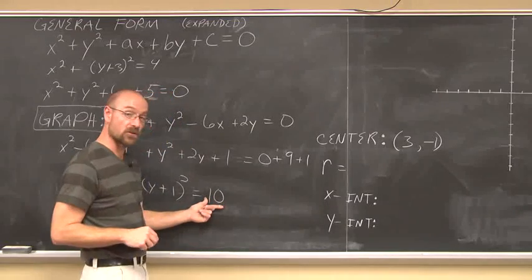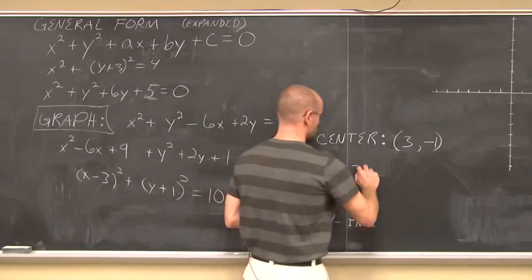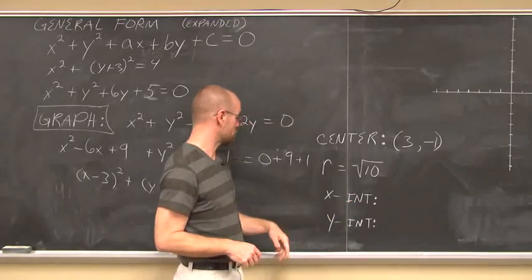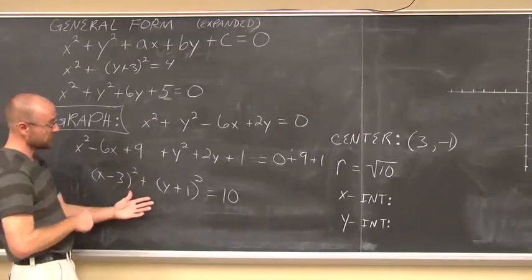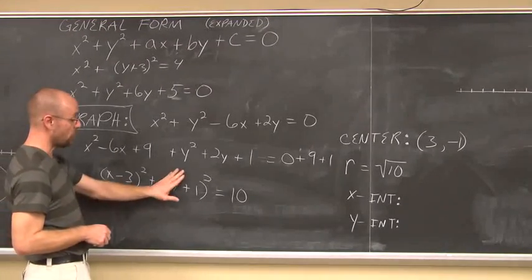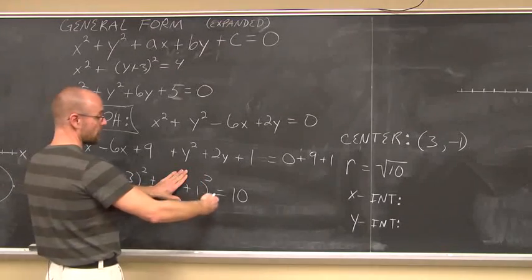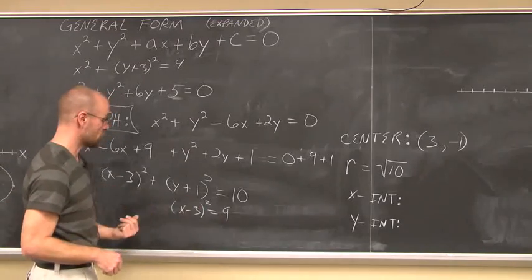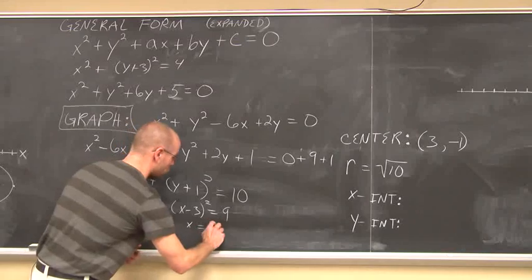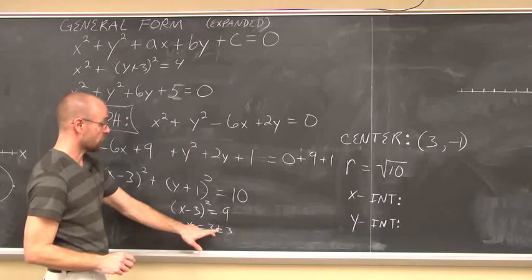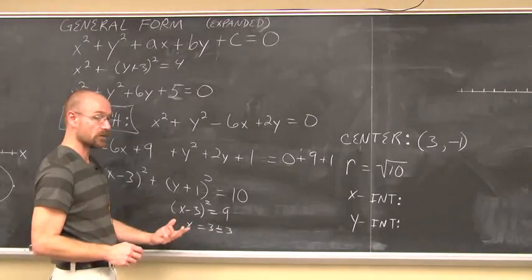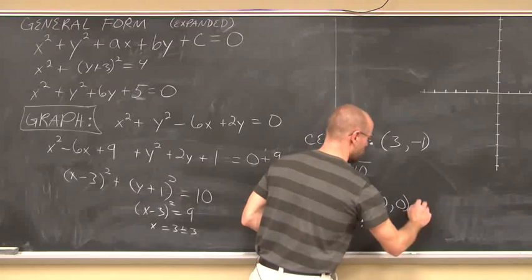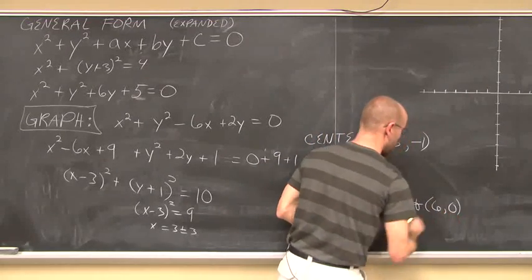The radius is always the square root of the value on the right side. The square root of 10 is not a nice number — it's irrational — so we leave it as square root of 10. To find x-intercepts, set y to 0: 1 squared is 1, subtract 1 from both sides to get x minus 3 quantity squared equals 9. Using the square root method: x equals 3 plus or minus 3. So x equals 6 or x equals 0. Those are my two x-intercepts.